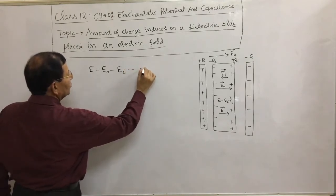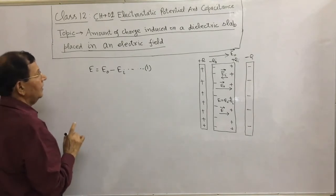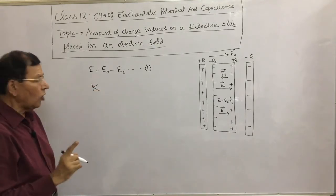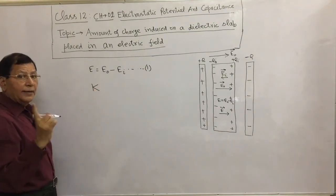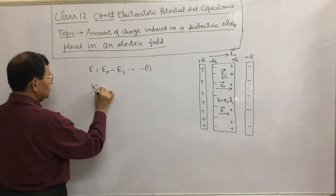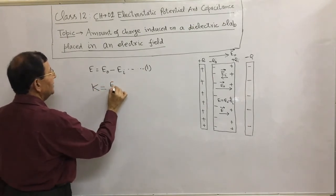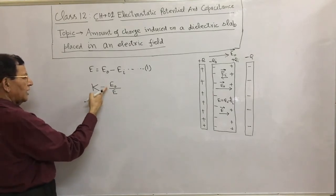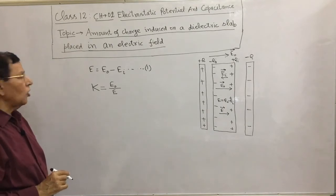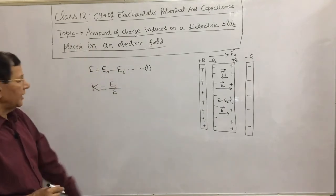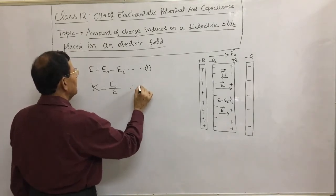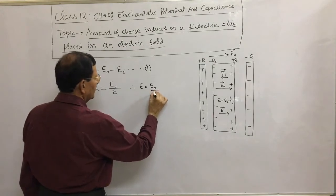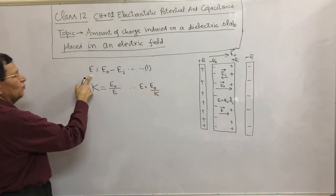The dielectric constant of a dielectric, denoted by capital K or epsilon, is defined as the ratio of the applied electric field to the reduced electric field. So K equals E0 over E. This ratio of E0 to E is called the dielectric constant or relative permittivity of the material. Therefore E equals E0 over K.